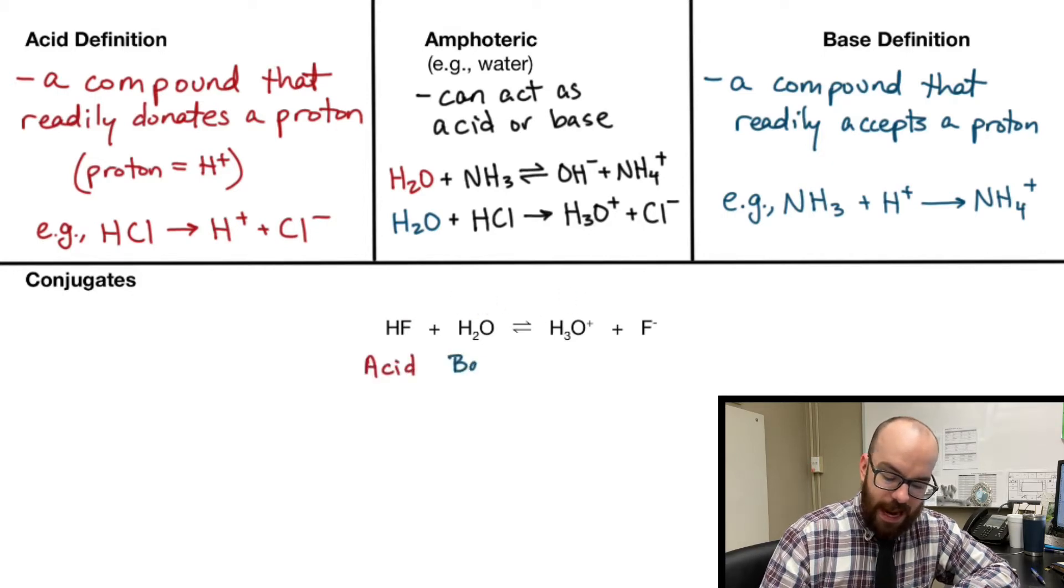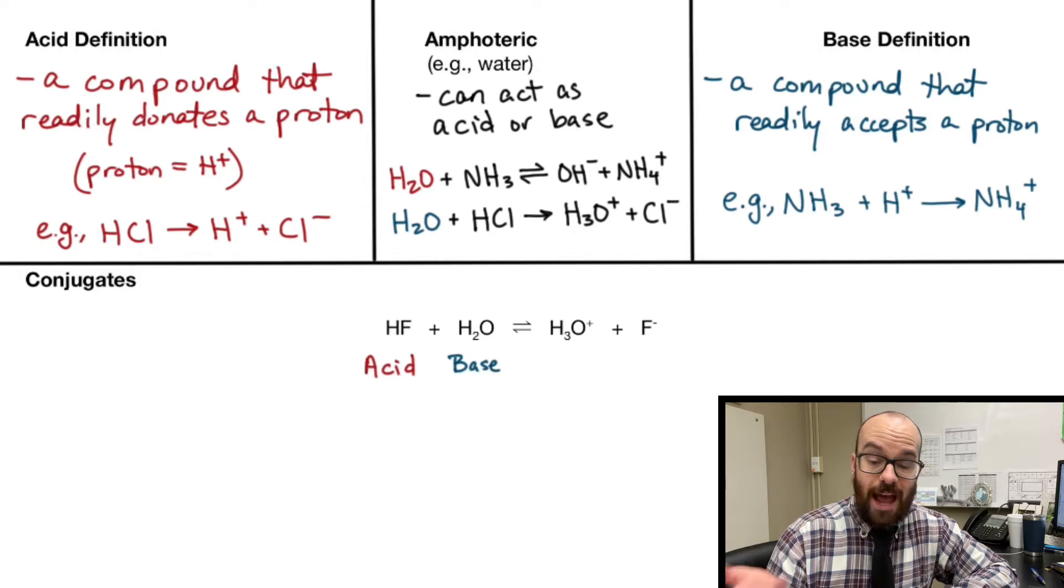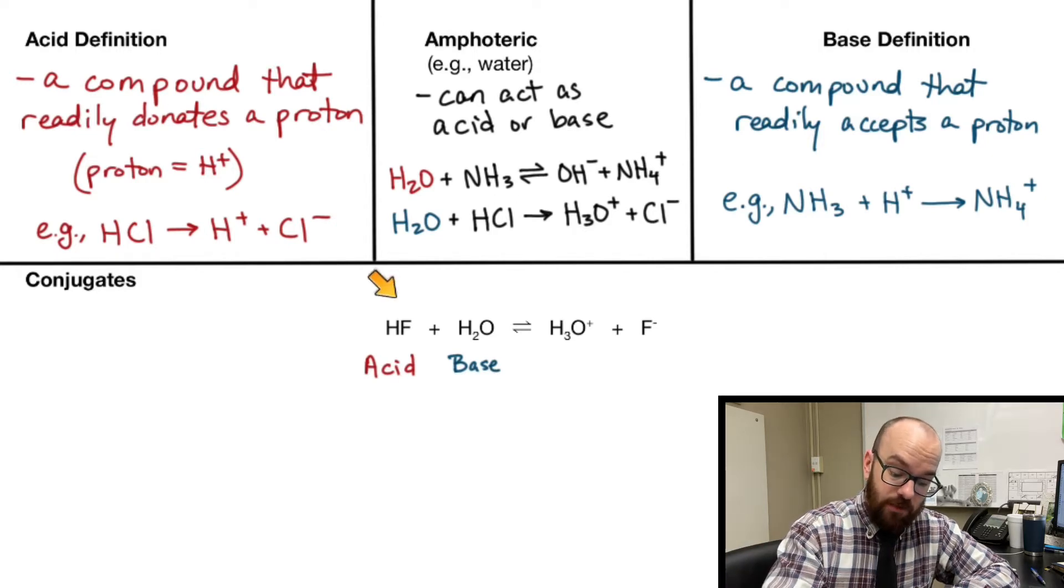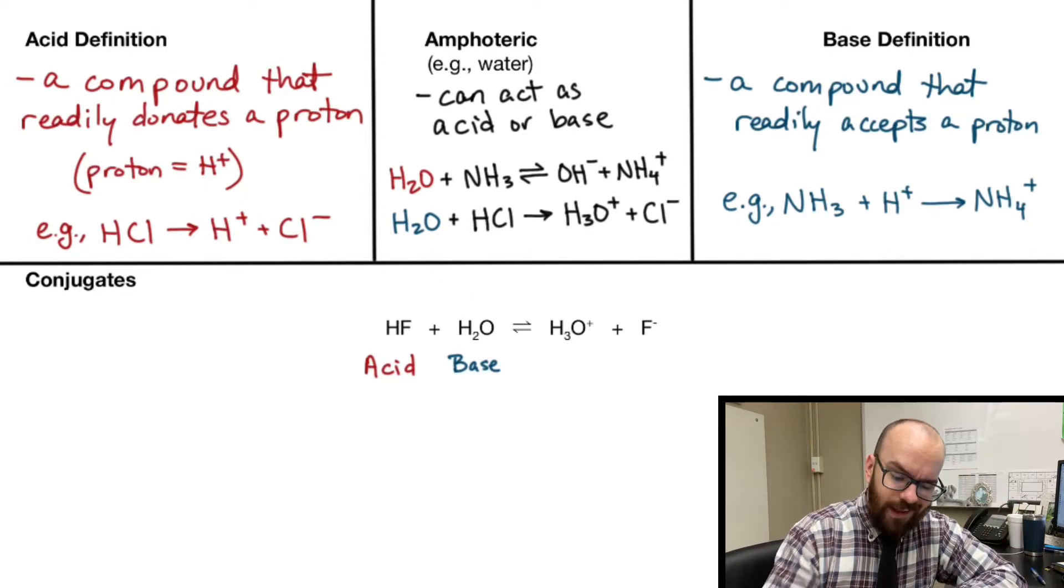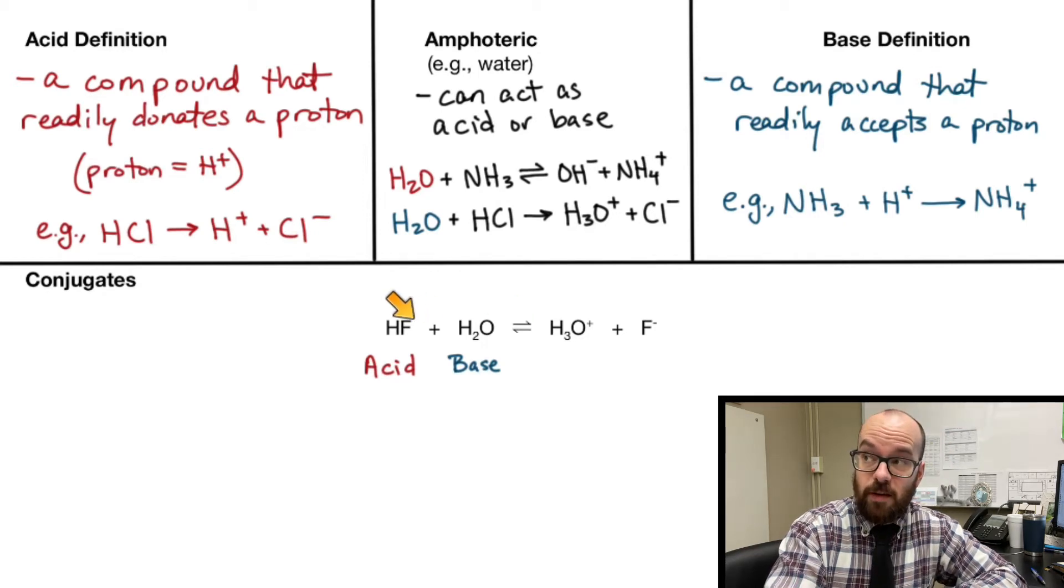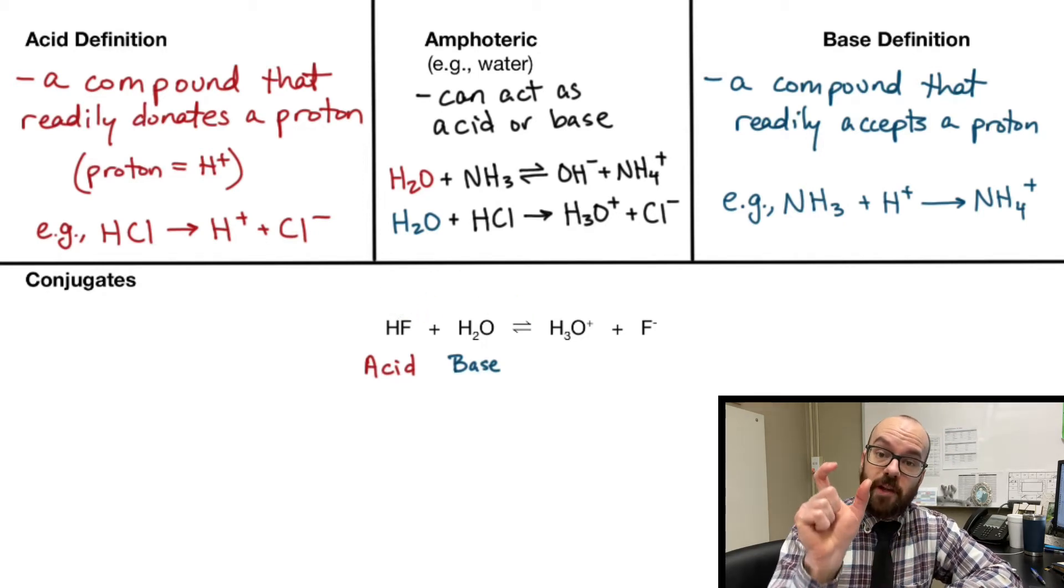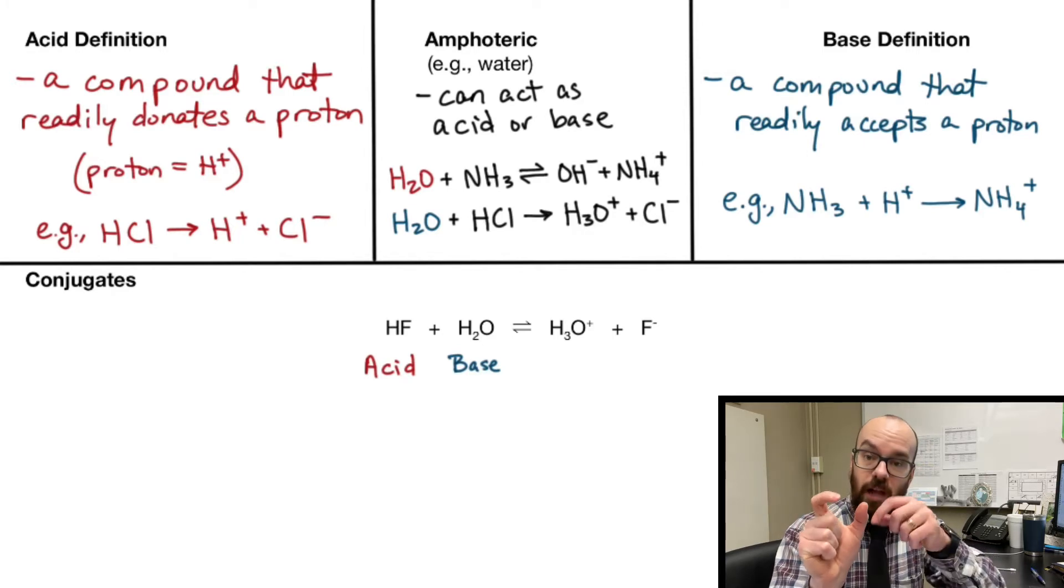Let's identify our acid. HF, of course, is the acid. Water is going to act as a base because HF is an acid. If water is with an acid, water is going to act as a base because that hydrogen from the HF has to have somewhere to go to.